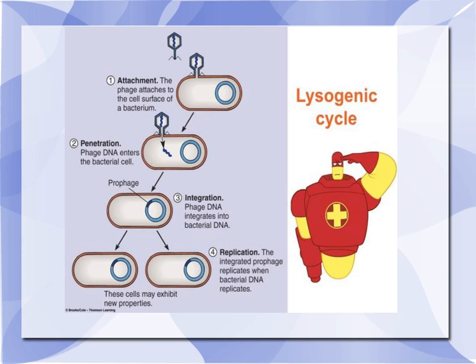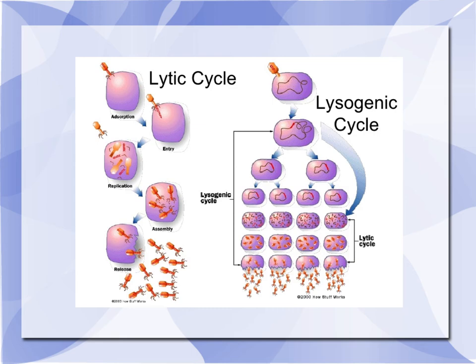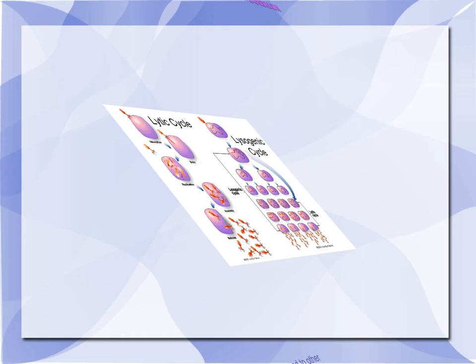Here's a picture where a bacteriophage injects and becomes part of the host cell genome, and then when the host cell divides, they have two copies of the virus. Here's a comparison of the two, where the lytic is almost immediate — bursts out and goes — while the lysogenic cycle will take a while.